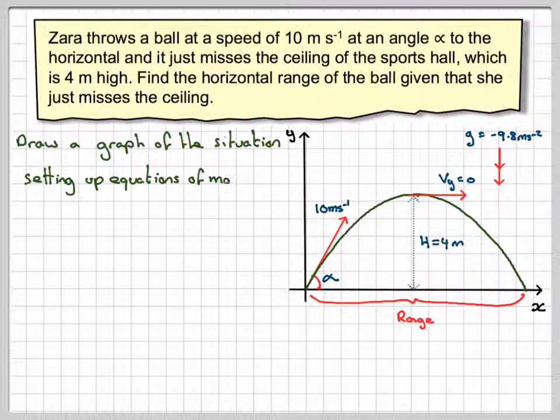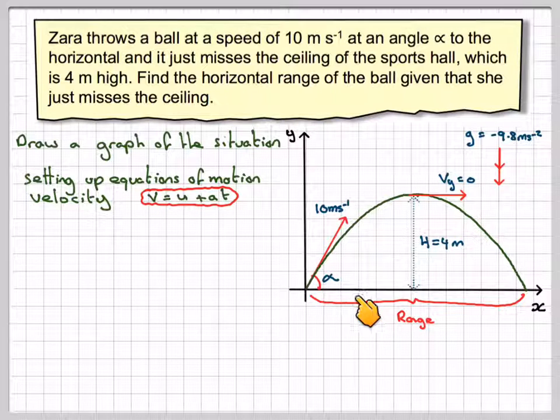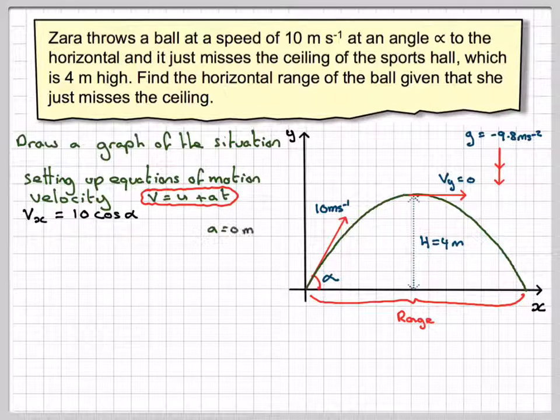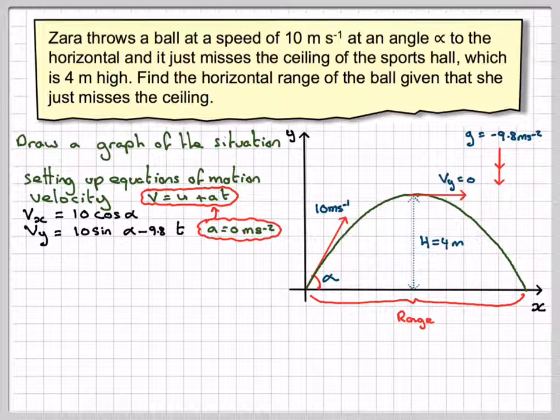Setting up the equations of motion for velocity, we use V equals U plus AT. The horizontal velocity will be 10 cos alpha where A is 0 metres per second squared, and the vertical velocity will be 10 sin alpha minus 9.8 times T.